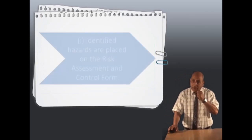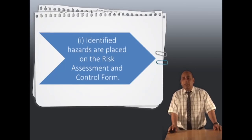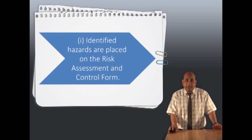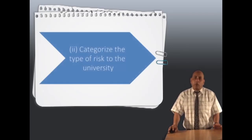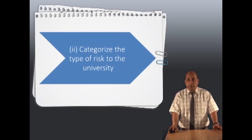First, we have to identify the hazards based on risk assessment and control. Second, categorize the type of risk to the university.